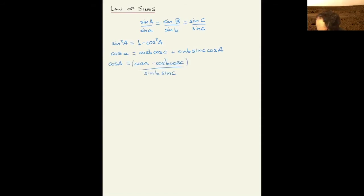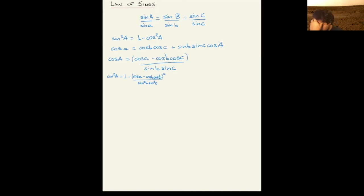Now substitute this into the expression for sine squared of A. I'll put it all under the same denominator and substitute sine squared little b and sine squared little c by their respective cosine formulations.